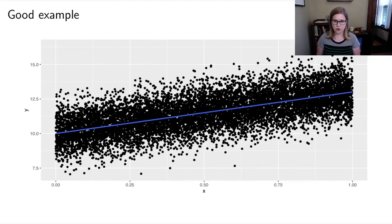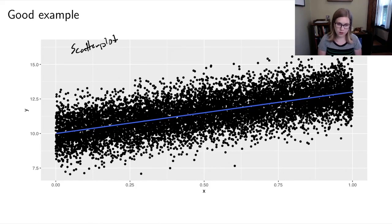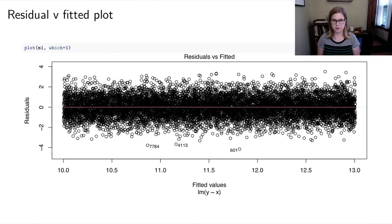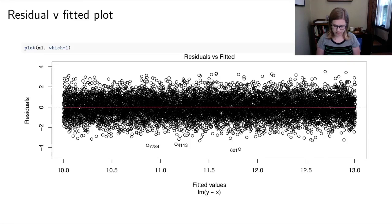I'll start with a good example using simulated data. This scatter plot shows the y variable versus the x variable, with the blue line of best fit. The first plot to examine is the residual versus fitted plot. You can generate it in R by calling plot on a model object — no ggplot needed — and it will give you the default residual versus fitted values plot.